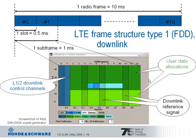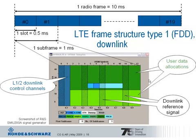A question was raised about the hashed areas shown over the entire bandwidth in the signal generator display. The downlink reference signals indicated by the hashed areas are not actually transmitted over the whole 10 MHz bandwidth — the hashing simply indicates the OFDM symbols that carry the downlink reference signals at specific subcarrier locations within those symbols. It is just a simplification that these areas are shown as fully hashed.